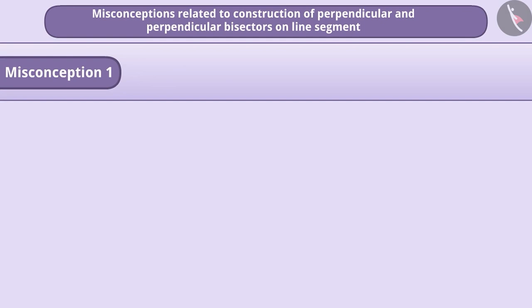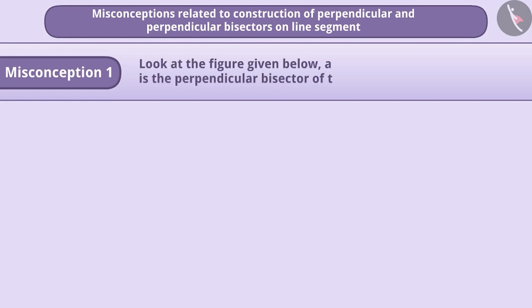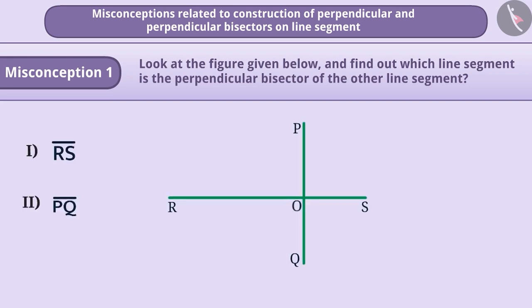Misconception 1. Look at the figure given below and find out which line segment is the perpendicular bisector of the other line segment. Some students fail to understand the concept of perpendicular bisectors properly. They believe that a perpendicular bisector is always vertical. With this understanding, they select option 2 as their answer, which is incorrect.